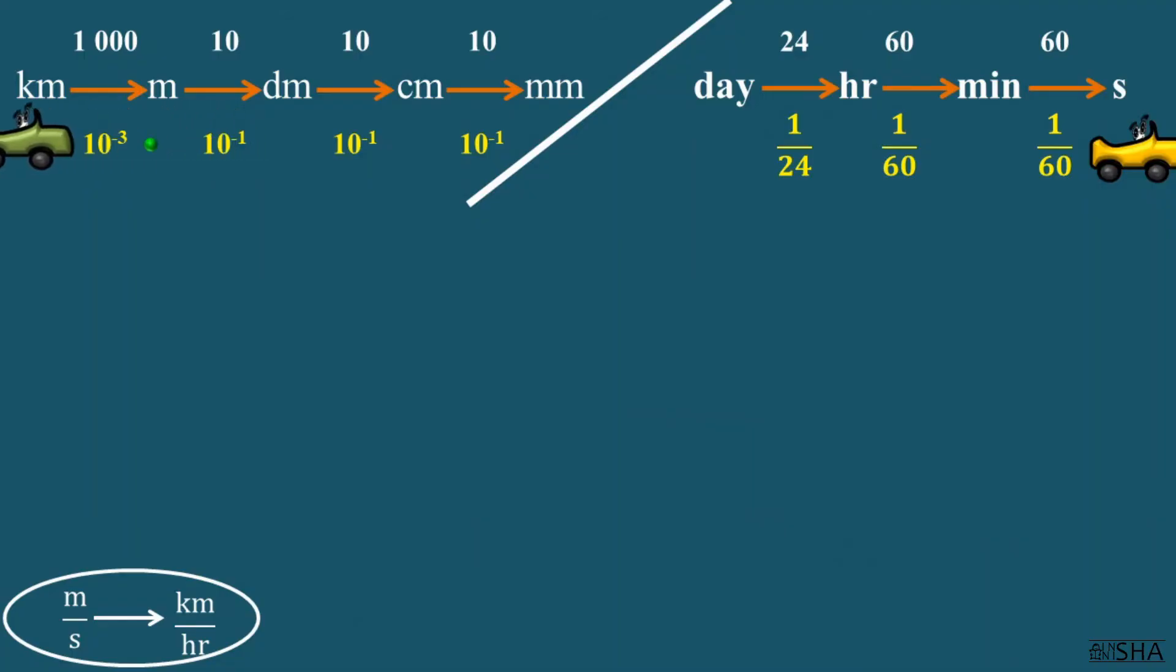Let's convert 30 meters per second to kilometers per hour. 30 is multiplied by 10 to the negative third power.